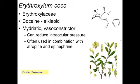Erythroxylum coca is from the Erythroxylaceae family, and this is, of course, the plant that is a source of cocaine. Cocaine is an alkaloid shown here on the right. Cocaine also has mydriatic activity, and it is also known to be a vasoconstrictor and a topical anesthetic as we've discussed in the past. It can reduce intraocular pressure and is often used in combination with atropine and epinephrine in the reduction of ocular pressure.